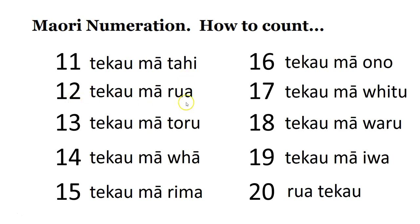Number 12: te kau mā rua. So te kau, and then we add 2. Te kau mā toru — so it's 10, add 3. Te kau mā whā. Number 15: te kau mā rima. Don't forget, rima is number 5.